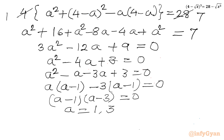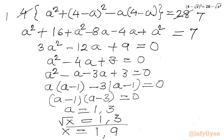The conclusion is a = 1 or a = 3. Since a was our substitution for √x, we write √x = 1 or √x = 3. Squaring both sides: x = 1 or x = 9. So our solution for the given radical equation is x = 1 and x = 9.